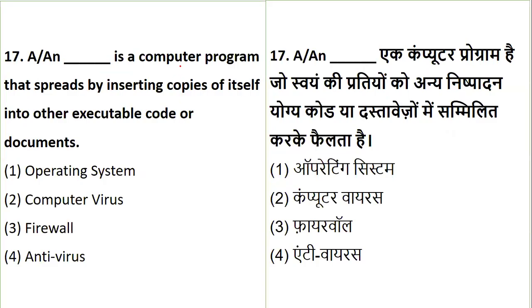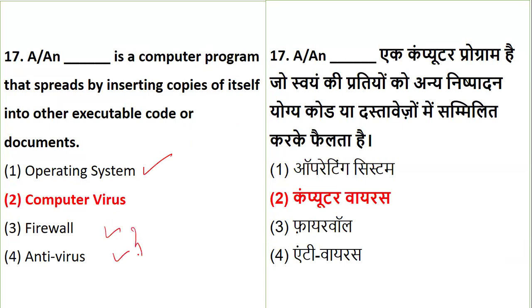The next question asks about a computer program that spreads by inserting copies of itself into executable code or documents. The options are operating system, virus, firewall, or antivirus. This should be a quick answer if you know the concepts. A firewall and antivirus are solutions to computer viruses. An operating system controls peripherals. The one that spreads by inserting copies of itself is a computer virus.